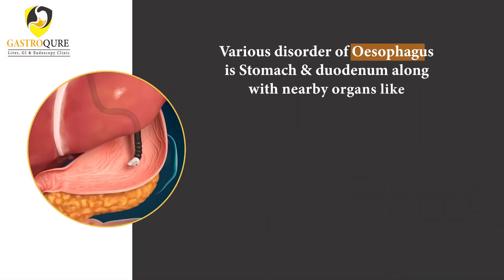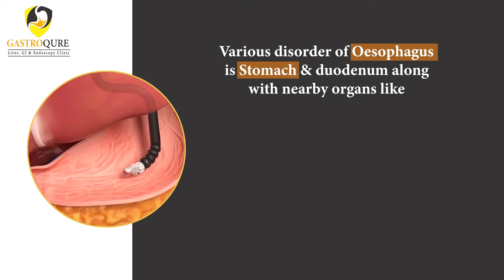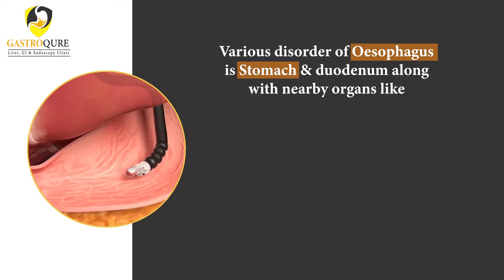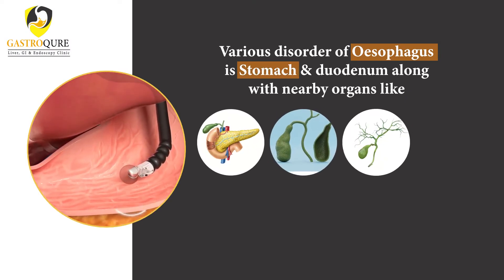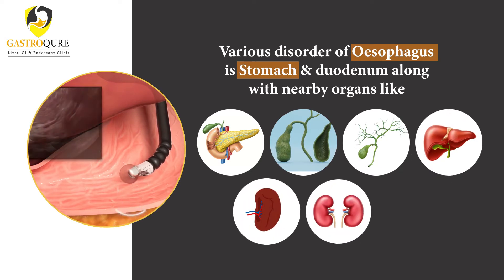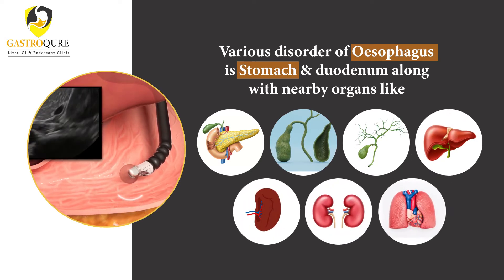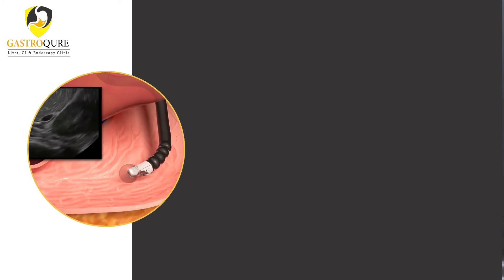Various disorders of the esophagus, stomach, and duodenum, along with nearby organs like the pancreas, gallbladder, bile duct, liver, spleen, kidney, and mediastinum can be easily identified by this technique.